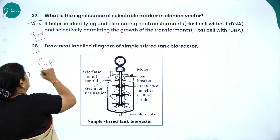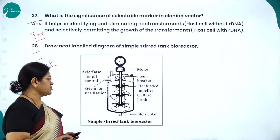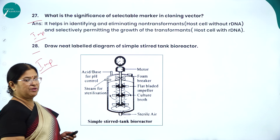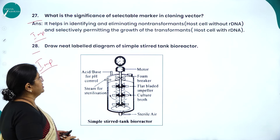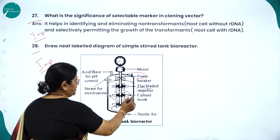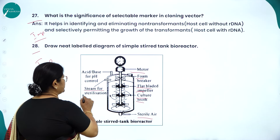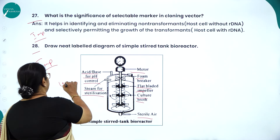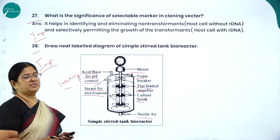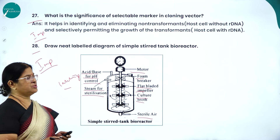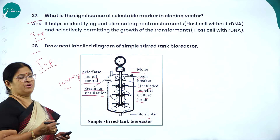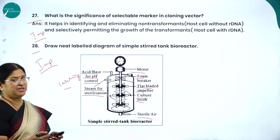There are two types of bioreactors: simple stirred tank bioreactor and sparged stirred tank bioreactor. The simple stirred tank bioreactor is usually asked in examinations. Its components include a motor, foam breaker, flat-bladed impeller, culture broth, sterile air inlet, steam for sterilization, and acid/base for pH control. Labelling is very important — unlabelled diagrams carry zero marks. For a five-mark question, around 10 labellings are required.